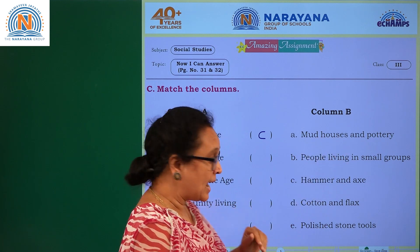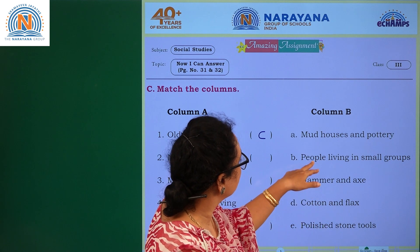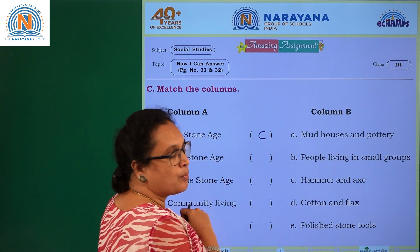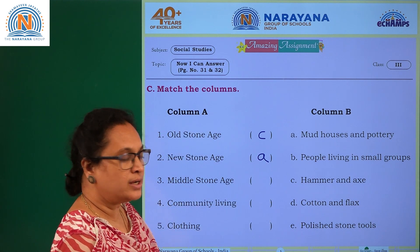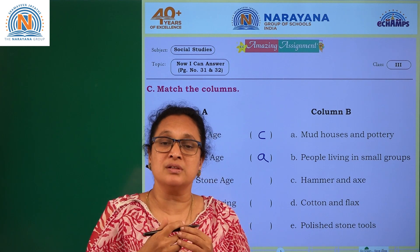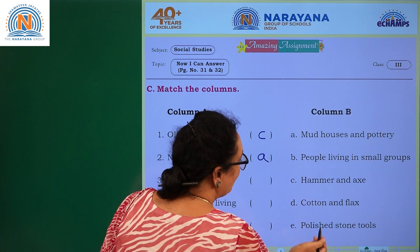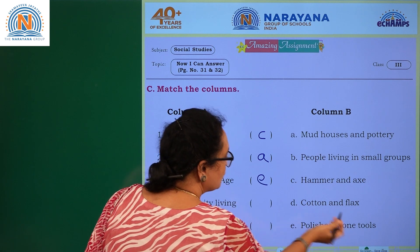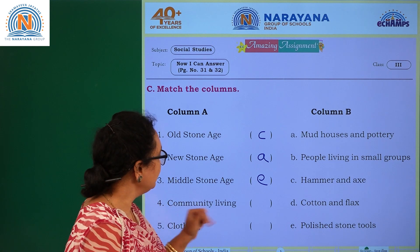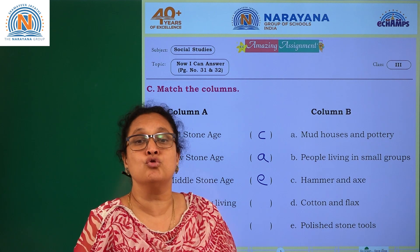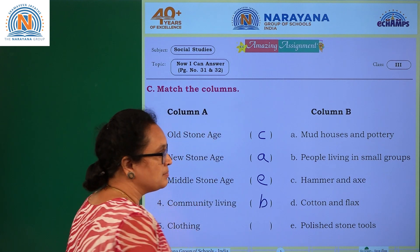For middle stone age: early man started polishing the tools to make them sharper, so the answer is polished stone tools — option E. For community living: living in houses in groups, so the answer is people living in small groups — option B.